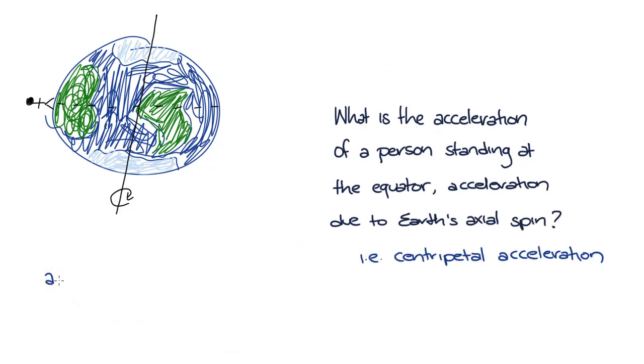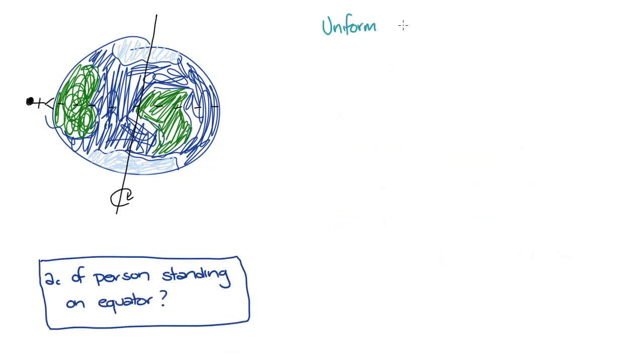To solve this, we need to approximate the Earth as a circle for this problem, so we can use our uniform circular motion tools. We know that the centripetal acceleration is equal to the tangential velocity squared divided by the radius, and we know that the speed is given by 2πr divided by big T, the period.